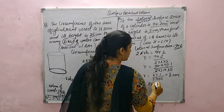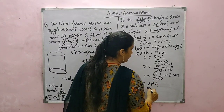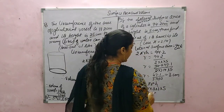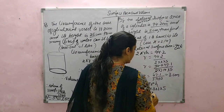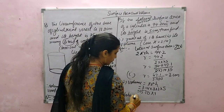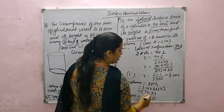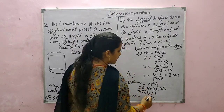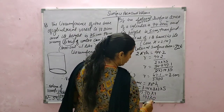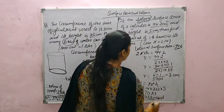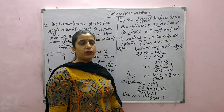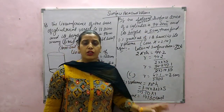Volume of cylinder is pi R square H, which is 3.14 into 3 square into 5. After multiplying these values, the volume equals 141.3 cm cube. This is the volume of the cylinder. In our next session, we will do different questions based on a different shape, which is the cone. Thank you.